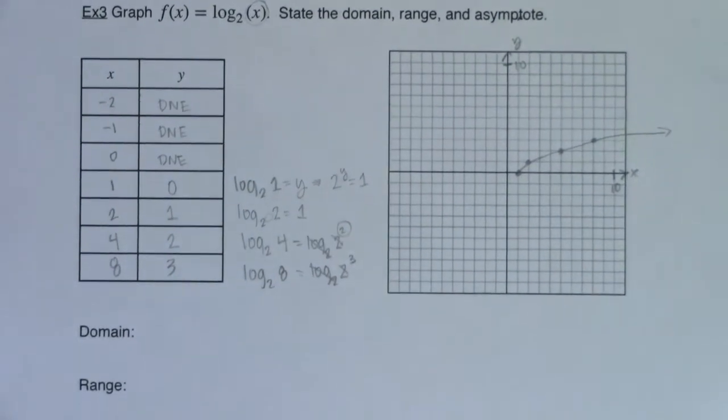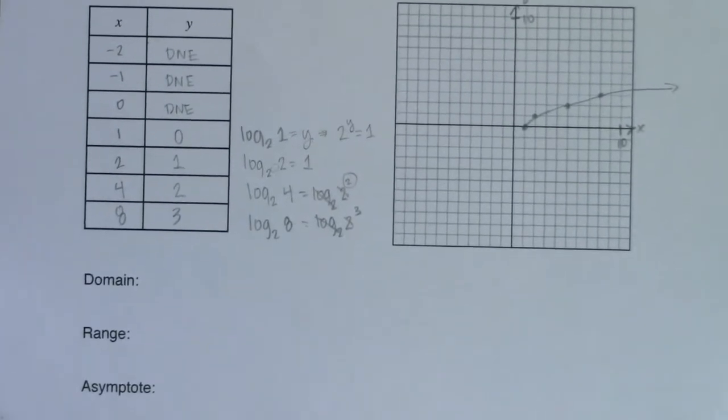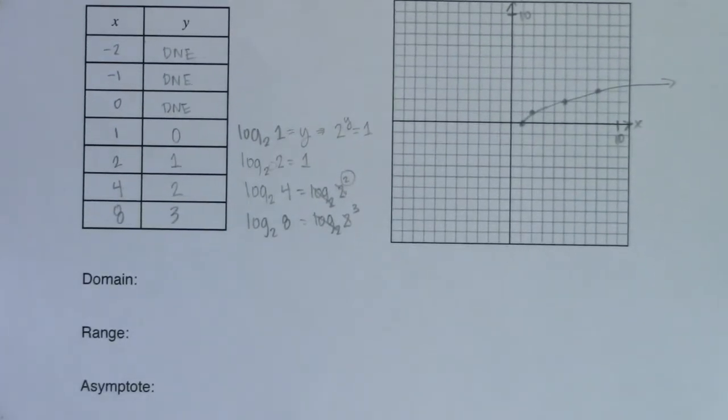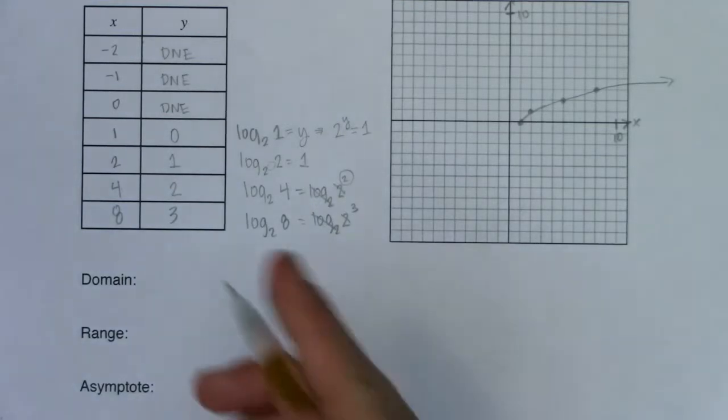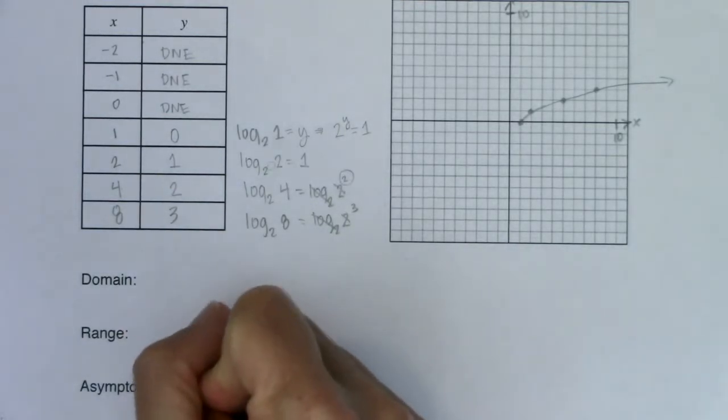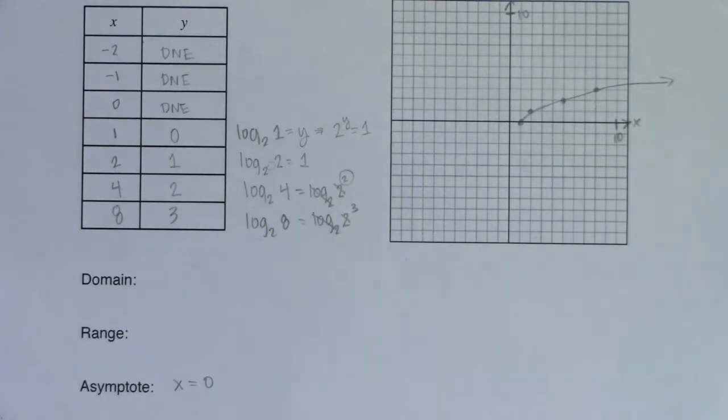Wherever your argument zeroes out, that's exactly where your asymptote will occur. So let me move this graph up so we can get some of our traits listed. All right, so if I take a look at that argument, that argument is x. So when x is equal to zero, I'm going to have a vertical asymptote.